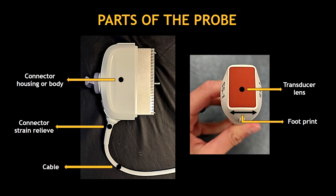On the right picture we can see the transducer lens, which is the orange part, and the footprint, which is the part that makes contact with the patient.